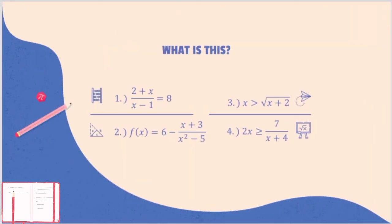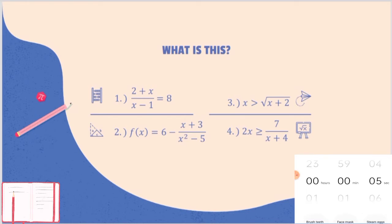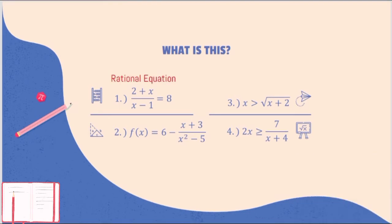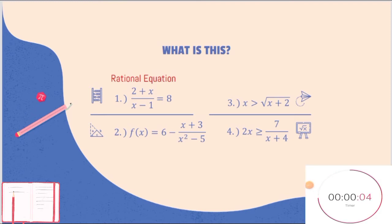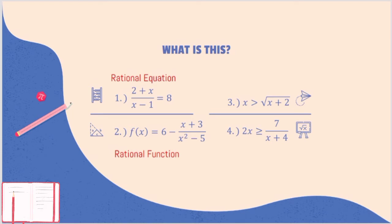Now, let's try to identify a rational equation, rational inequality, or rational function. Let's start with number 1. Number 1 is a rational equation. Number 2 is a rational function.